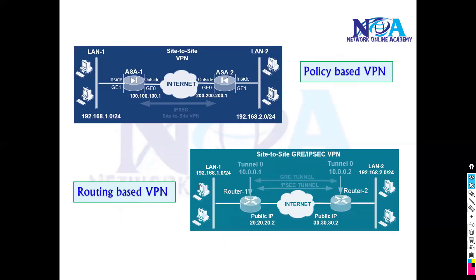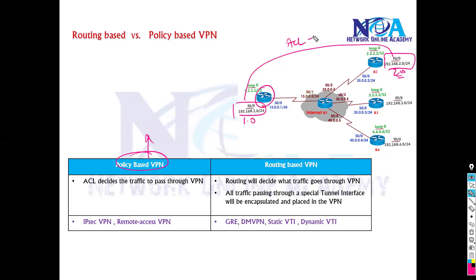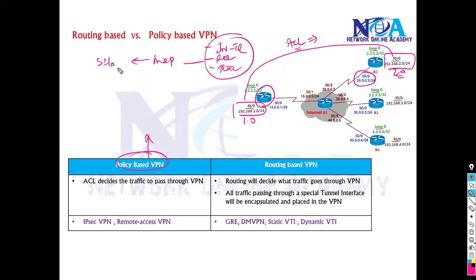If we try to compare the differences between them: the first main difference is that in the case of policy-based VPNs, if we want to send traffic from one network to another network, we configure an ACL that tells what will be the interesting traffic. Then under that we set the peer, the remote IP, the transform set, create a crypto map, and apply it on the interface. The ACL decides what traffic will be passed through the VPN and which traffic will have IPsec applied.